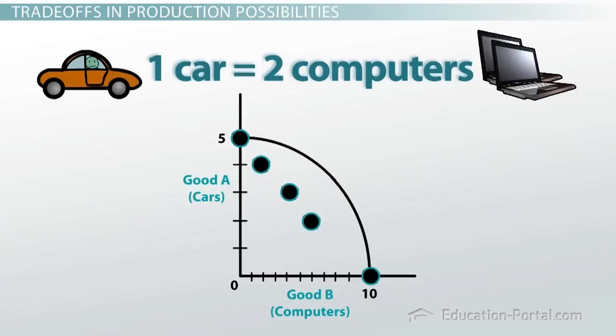When you account for all the possible combinations, given the opportunity cost of one car equals two computers, you end up with a line, like the one you see here, in this simple example.